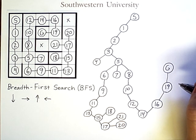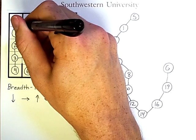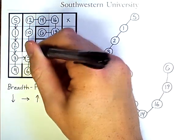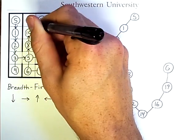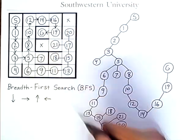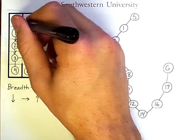So, notice that this search algorithm found a different path than depth first search did. It goes through this route here, which is actually the shortest path.